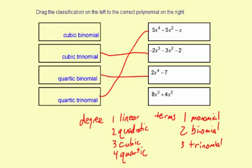And this fourth one, the degree is 3, so it's cubic. And there are two terms. It makes it a binomial. It's a cubic binomial.